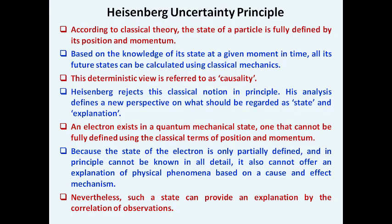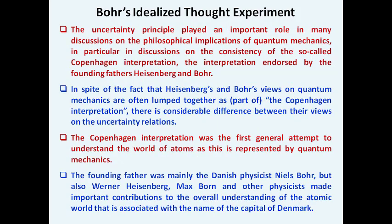Because the state of an electron is only partially defined and in principle cannot be known in full detail, it also cannot offer an explanation of physical phenomena based on cause and effect. Nevertheless, such a state can provide an explanation through the correlation of observations. These are the significant features represented by Heisenberg's uncertainty principle.